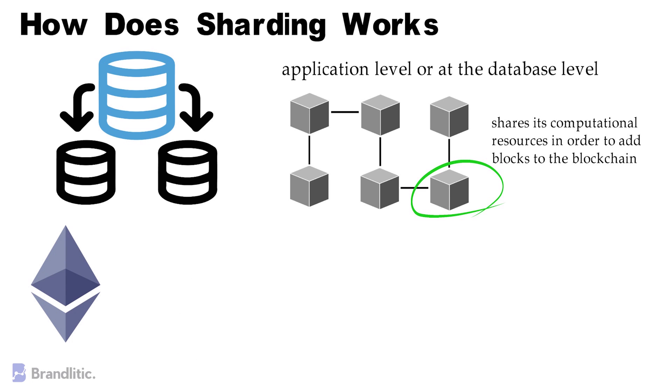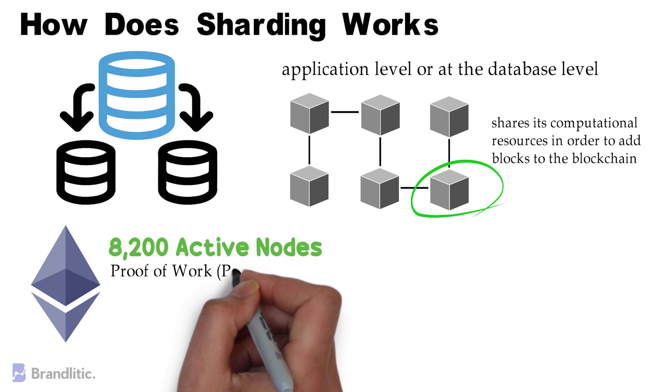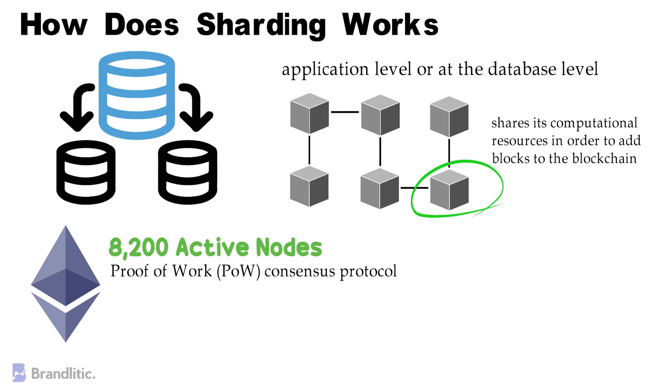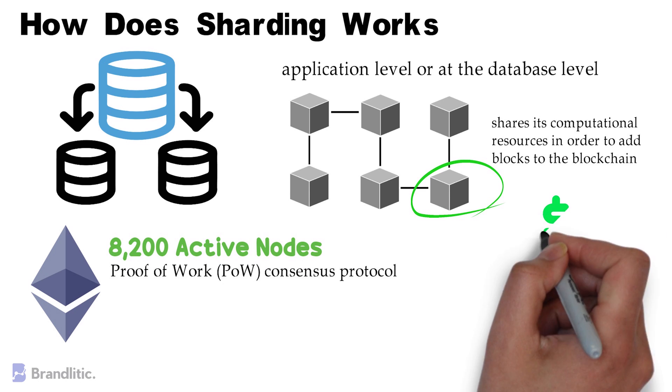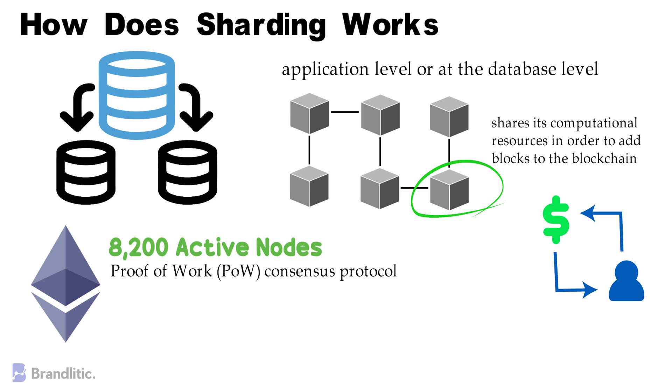in the case of Ethereum, the blockchain network has over 8,200 active nodes that sustain the healthy environment within the network. The Ethereum blockchain is currently based on the Proof-of-Work or PoW consensus protocol that requires users to pay gas fees. This means that if more users utilize the Ethereum blockchain, the higher the gas fees will be.